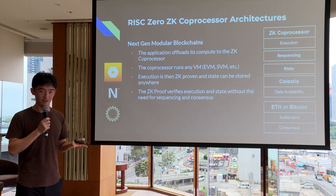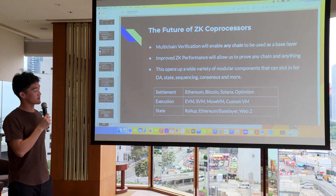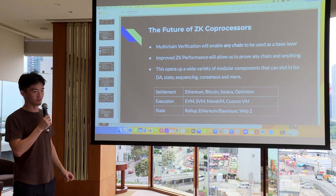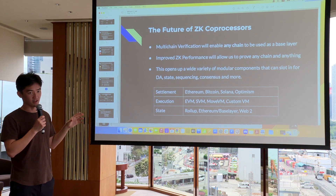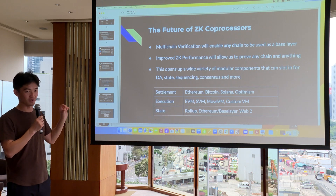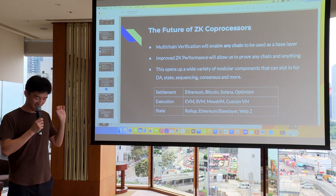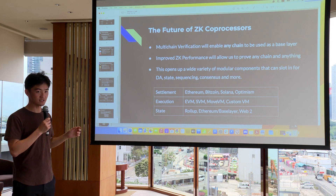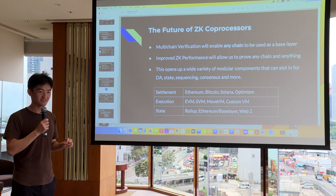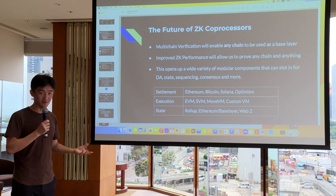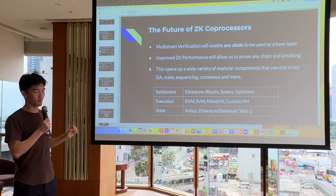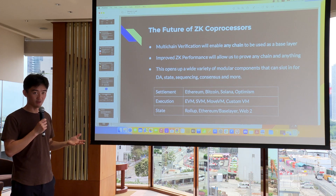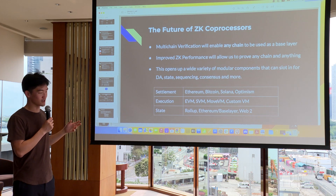The future of coprocessors we're thinking about includes multi-chain verification for any ZK proof, so you can use any chain for settlement — Ethereum, Bitcoin, Solana, Optimism, or Cosmos-based chains. We also have a major focus on improving ZK performance, which will unlock advanced DeFi primitives and even AI primitives we haven't been able to tap into yet. The eventual goal is opening up the variety of modular components that rollups can utilize to build their stack.